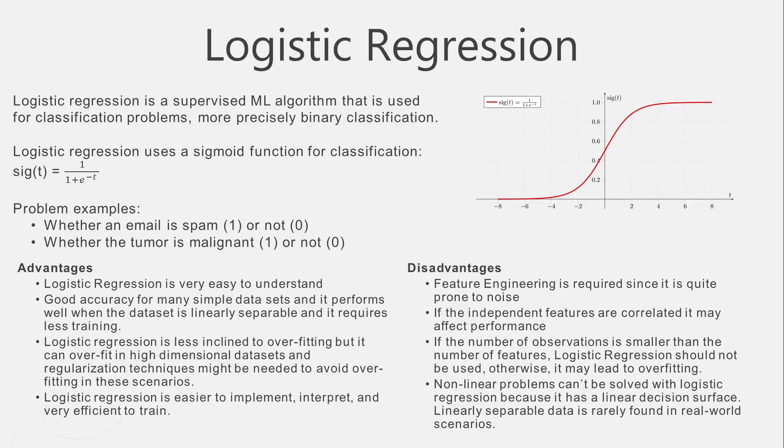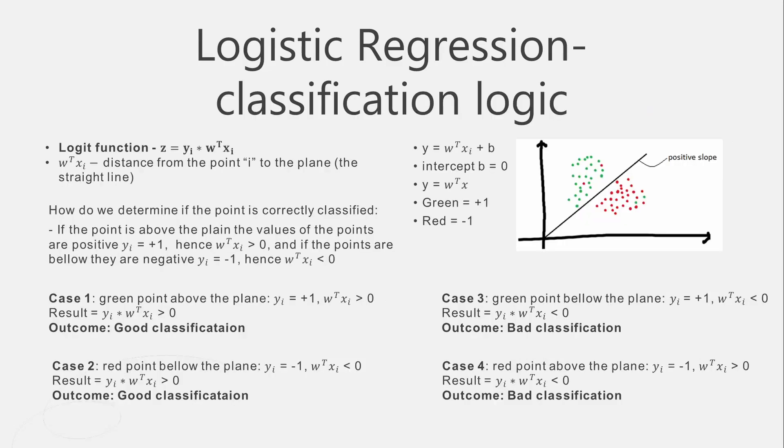On the other hand, the disadvantages are: feature engineering is always required because this algorithm is sensitive to noise. If the features are correlated it can affect the performance of the model. If we have more features than records — more columns than rows in our data set — the logistic regression model is not useful as it will lead to overfitting. Finally, in non-linear problems where the data is not linearly separable, logistic regression will not be able to correctly classify the data.